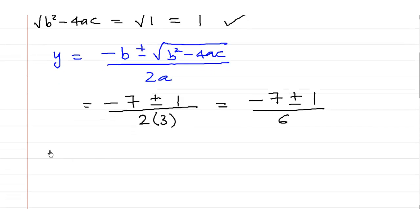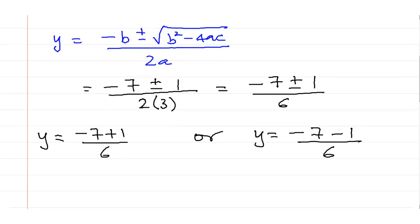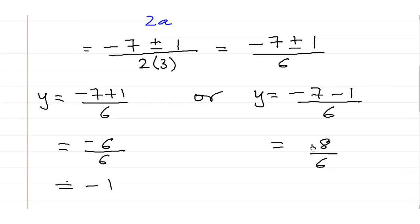We can split this as: y = (-7 + 1) / 6 or y = (-7 - 1) / 6. So (-7 + 1) / 6 = -6/6 = -1. Similarly, (-7 - 1) / 6 = -8/6, which simplifies to -4/3. So the formula method is one of the simplest methods to use.